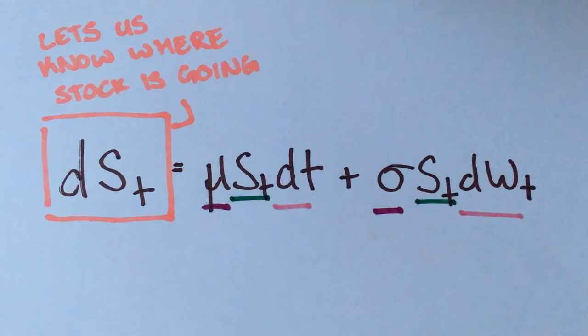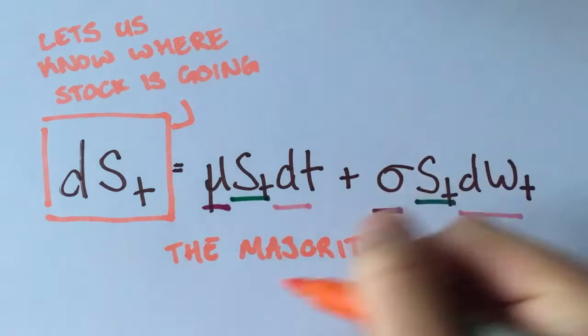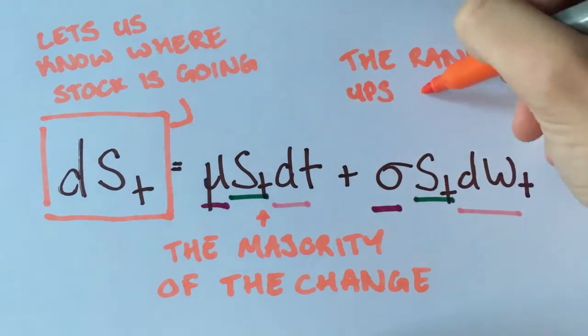Together, the first part affects the expected change in price at the end of the time period, and the second, the net change of the random ups and downs.